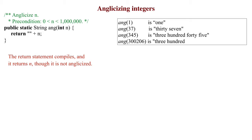As examples, we show the results of calling ang with arguments 1, 37, 345, and 300206.